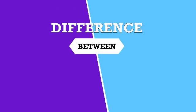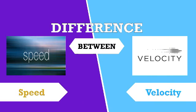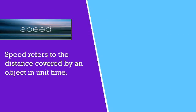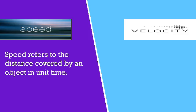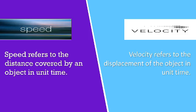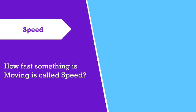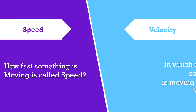The difference between speed and velocity: speed refers to the distance covered by an object in unit time, velocity refers to the displacement of the object in unit time. How fast something is moving is called speed. In which direction something is moving is called velocity.